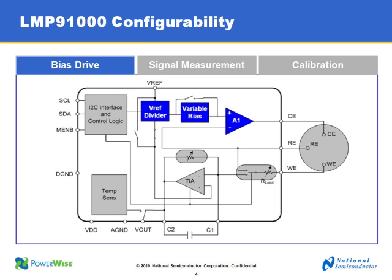These next slides go over the LMP91000's configurability and functionality. Looking at the bias drive — the blue shaded boxes — the LMP91000 provides a three-electrode solution interface: collector electrode, reference electrode, and working electrode. The LMP91000 provides an adjustable bias voltage to the sensor. The bias can be negative, zero, or positive depending on the type of sensing element, which allows it to support a wide range of chemical sensing cells.